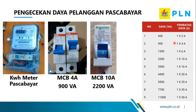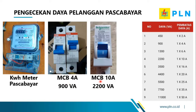Jika menggunakan MCB 4 ampere maka dayanya adalah 900 VA. Kemudian jika di lapangan kita jumpai MCB dengan tulisan CL10 — CL10 ini adalah pembatas arus 10 ampere. Jika menggunakan MCB 10 ampere maka daya pelanggan tersebut adalah 2200 VA. Jadi untuk pelanggan pasca bayar, kita bisa mengetahui daya kontrak PLN dari pembatas MCB yang digunakan pada KWH meter tersebut.